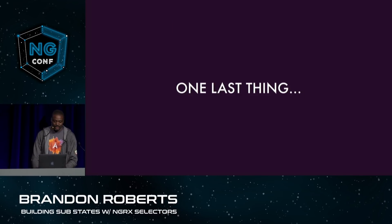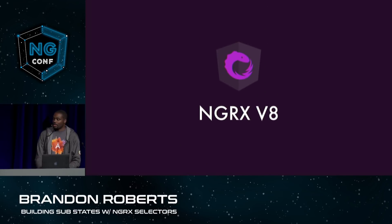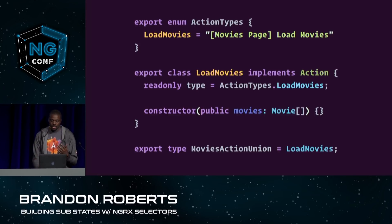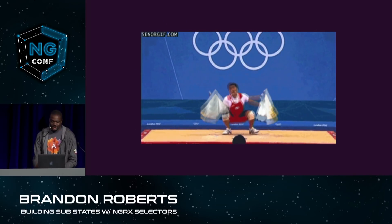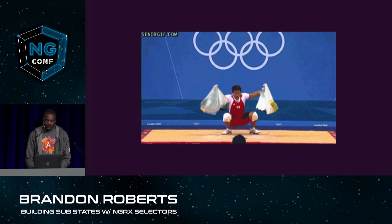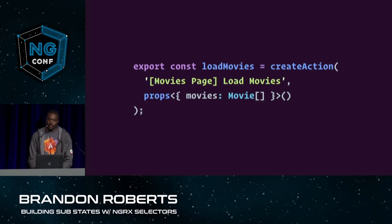Let's talk about one last thing: the upcoming NGRX version 8. Today, NGRX is about explicitness and type safety, using action classes and enums, and this works but can feel heavy. Thanks to open source collaboration, we came up with a less verbose way to create actions. We've introduced action creators in NGRX, available in version 7 and simplified even more for version 8. We still retain the same type safety and explicitness with less code.